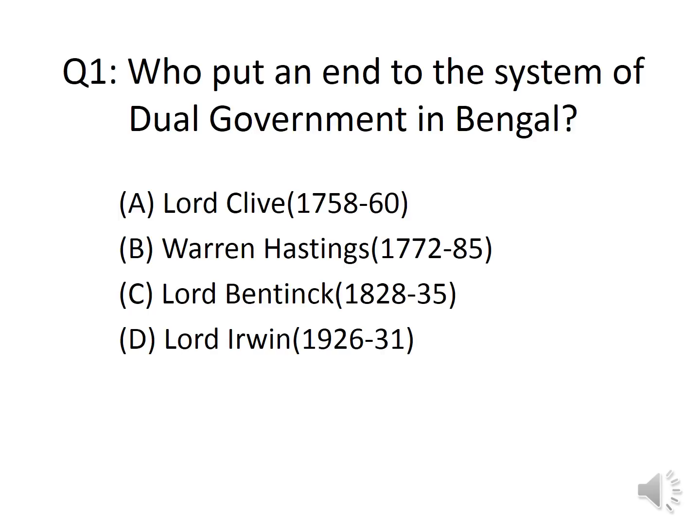Question 1: Who put an end to the system of dual government in Bengal? Options: A. Lord Curzon, B. Warren Hastings, C. Lord Bentinck, D. Lord Irwin. The answer is Option C, Lord Bentinck. He was the first Governor General of India. Actually the designation was Governor General of Bengal before he took charge. Warren Hastings was the first Governor General of Bengal. I have given the period of tenure of all of them.